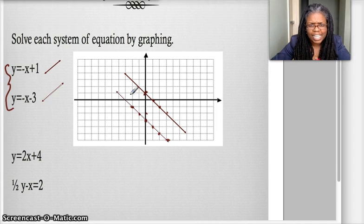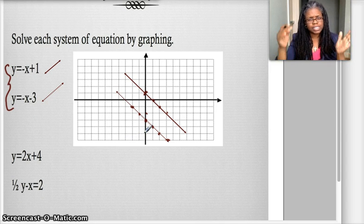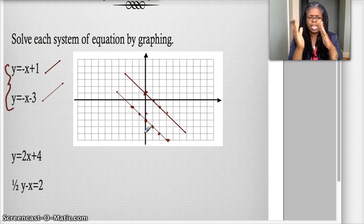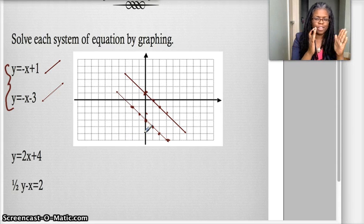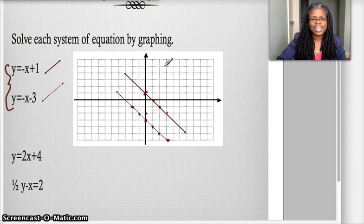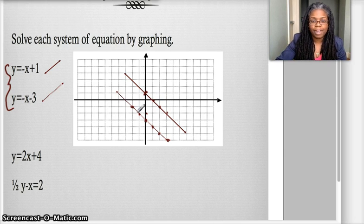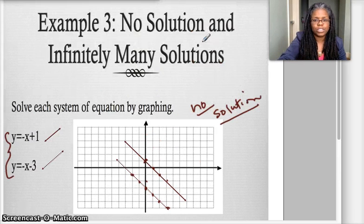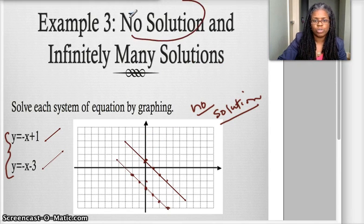And when I graph my line, and I used a dotted line here and a dotted line here so we could differentiate, notice those two lines never intersect. They don't intersect. And what do we call lines that don't intersect? Do you guys remember? They're called parallel. So when I have a situation where my lines are parallel, I graph the two lines and they are parallel, what I find is that there is no solution. Because remember, a solution is when they intersect. So that's one situation where we have no solution.